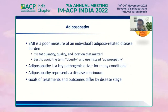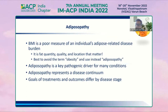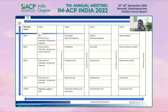BMI is a very, very poor measure of an individual's adipose-related disease burden. It is the fat quantity, fat quality, and location that matters. Therefore, it is best to avoid the term obesity and instead use the term adipopathy or ABCD — adiposity-based chronic disease. ABCD or adiposopathy is a key pathogenic driver of many conditions and represents a disease continuum. Based on the goals, treatments and outcomes will differ according to disease stage.